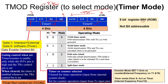The first 2 bits — bit 0 and bit 1 — are used to select the mode. Similarly, bits 4 and 5 select the mode for Timer 1. If M1 M0 is specified as 0-0, it will work in Mode 0, which is a 13-bit timer mode.